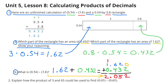Part B: What is 54 hundredths times 3 and 8 tenths? That would be the same thing as adding up those two areas: 1 and 62 hundredths plus 432 thousandths equals 2 and 52 thousandths.